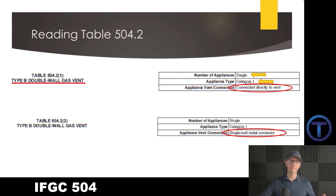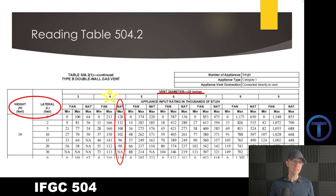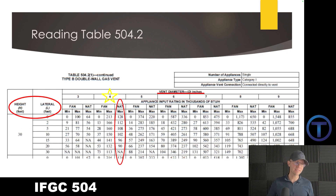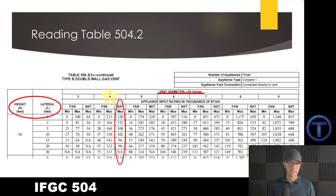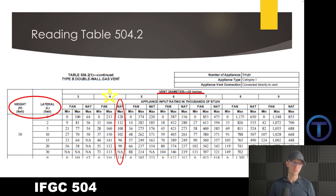Let's focus on what we deal with. We would be doing a type B double wall gas vent, and we can install that connected directly to the appliance or hooking up a single wall connector. Then we can start using these tables. Once we've figured out which table to use, we get right down into the nitty gritty of the table itself to find out the size of the vent. Not only do we need to know the vent type, like B vent, single, Category 1 — but we also need to know the height.